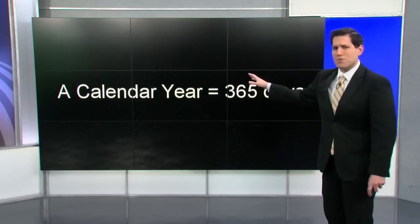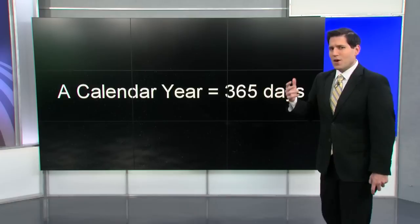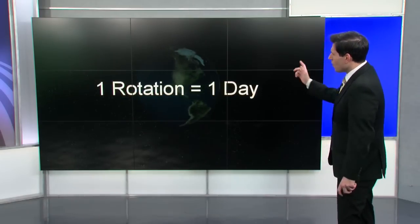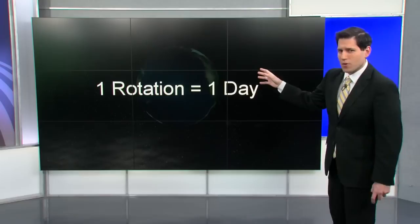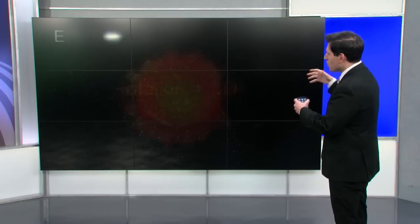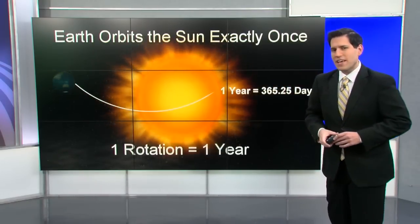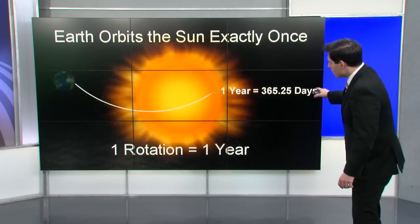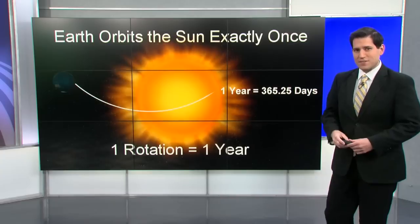A calendar year is typically 365 days, right? Well, kind of. One rotation equals one day on Earth, and as the Earth goes around the sun, it actually takes us 365 days and 0.25 days.